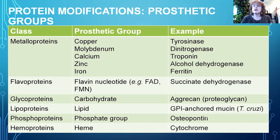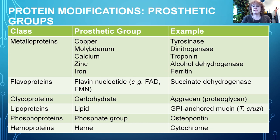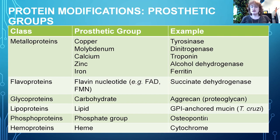There's an enzyme called tyrosinase. This enzyme catalyzes the first step in synthesizing the skin pigment melanin, and it requires a copper ion to be functional. The flavoproteins use flavonucleotides, synthesized from nucleotides as well as a vitamin called riboflavin. An example is succinate dehydrogenase, an enzyme that occurs in the citric acid cycle and is bound to the inner mitochondrial membrane. The last four — glycoproteins, lipoproteins, phosphoproteins, and hemoproteins — we'll be exploring in more depth. Many different proteins actually contain prosthetic groups.